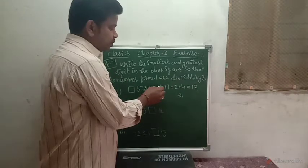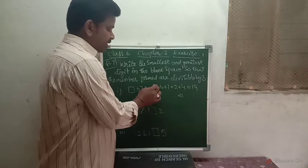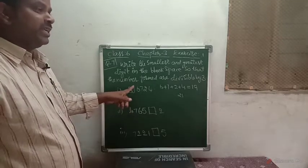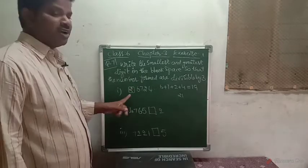So we just add 2 in this blank. This is one number which is exactly divisible by 3. This is the smallest digit.